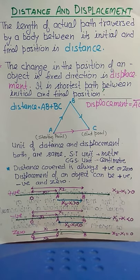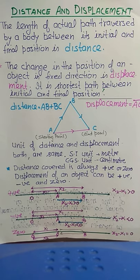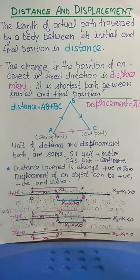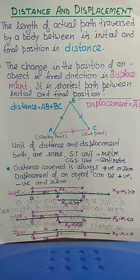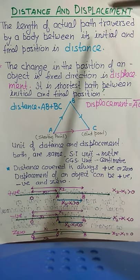Now I am going to discuss displacement. The shortest distance between the initial point and the final point is displacement. The change in the position of an object in a fixed direction is displacement.